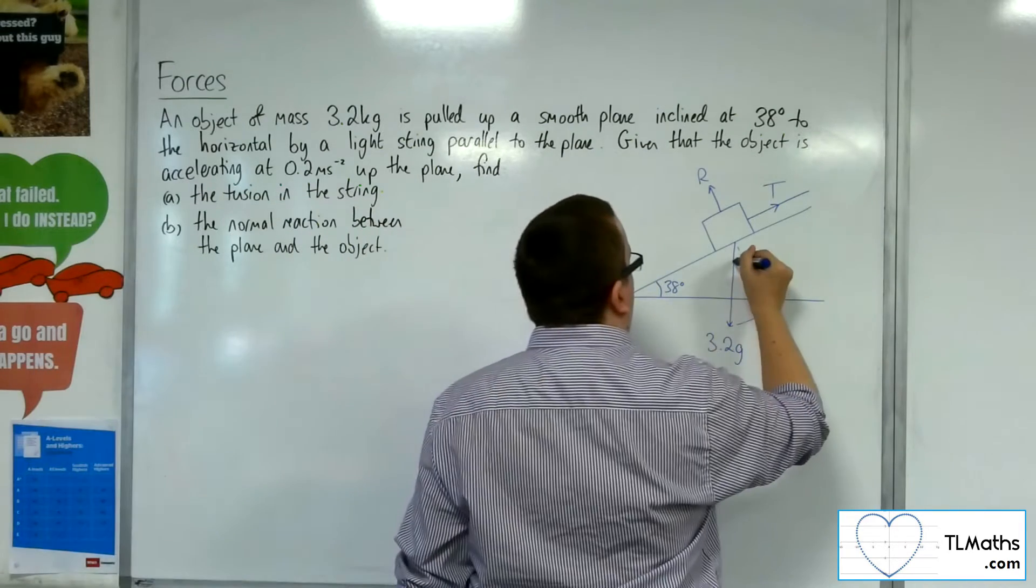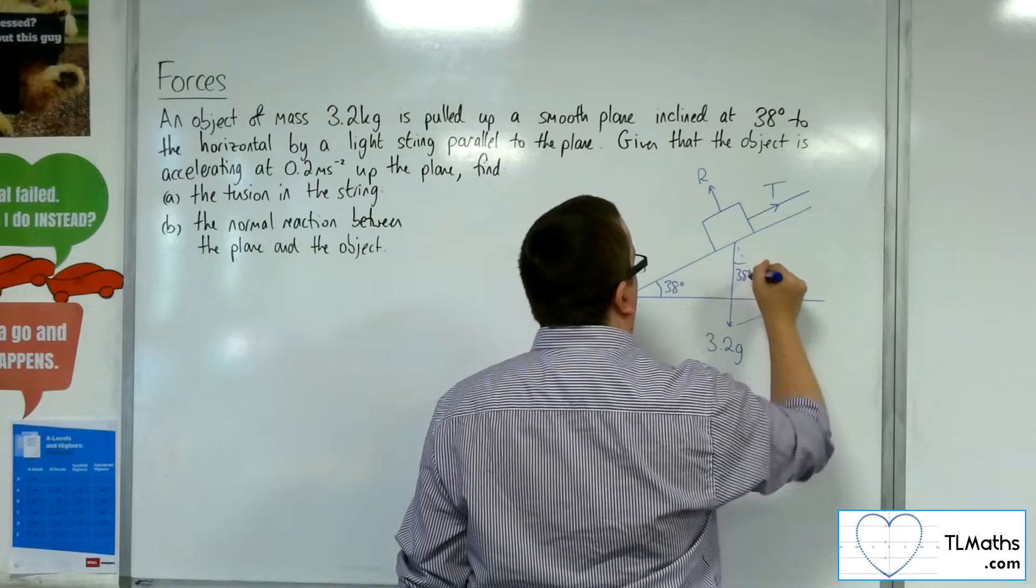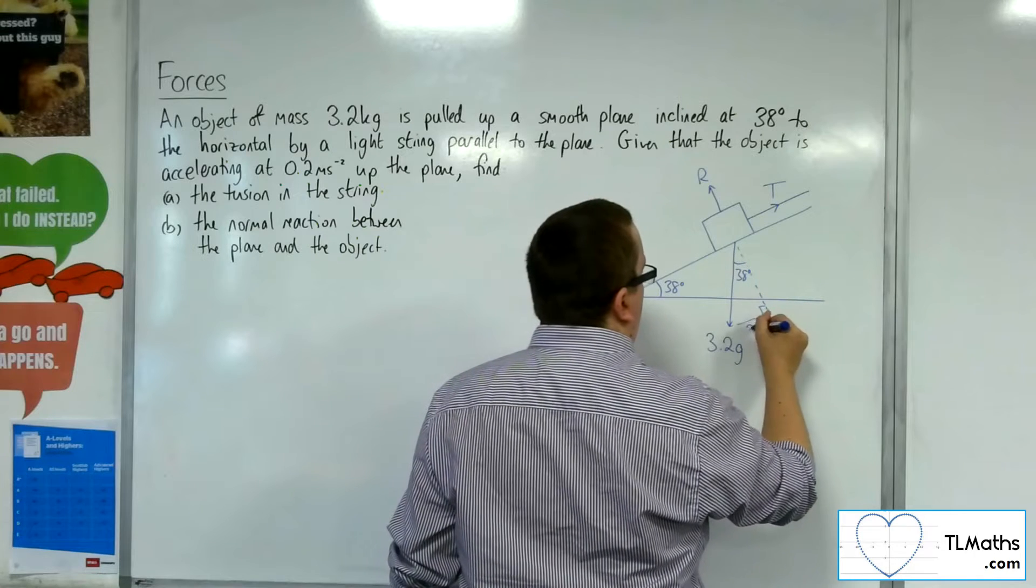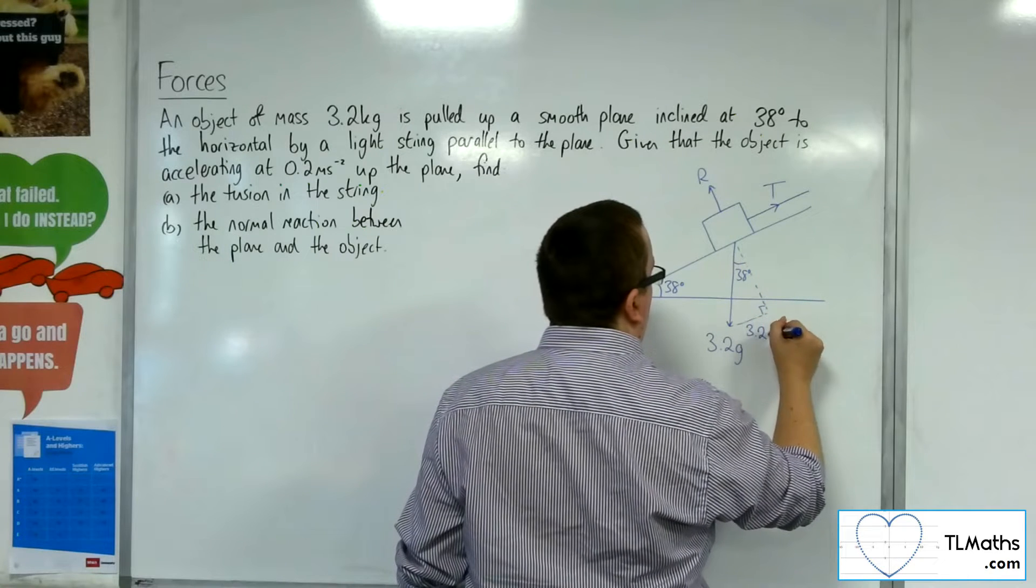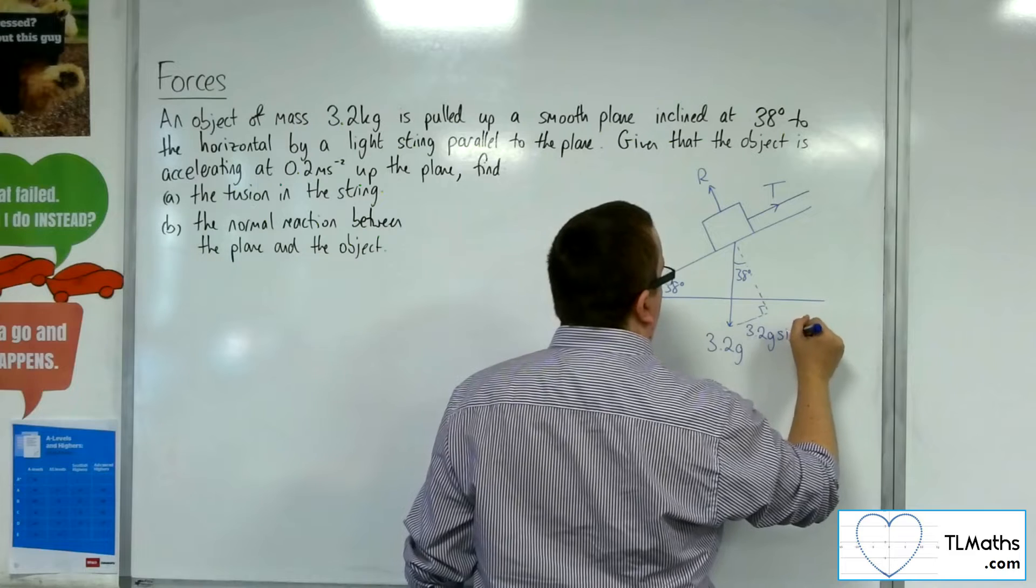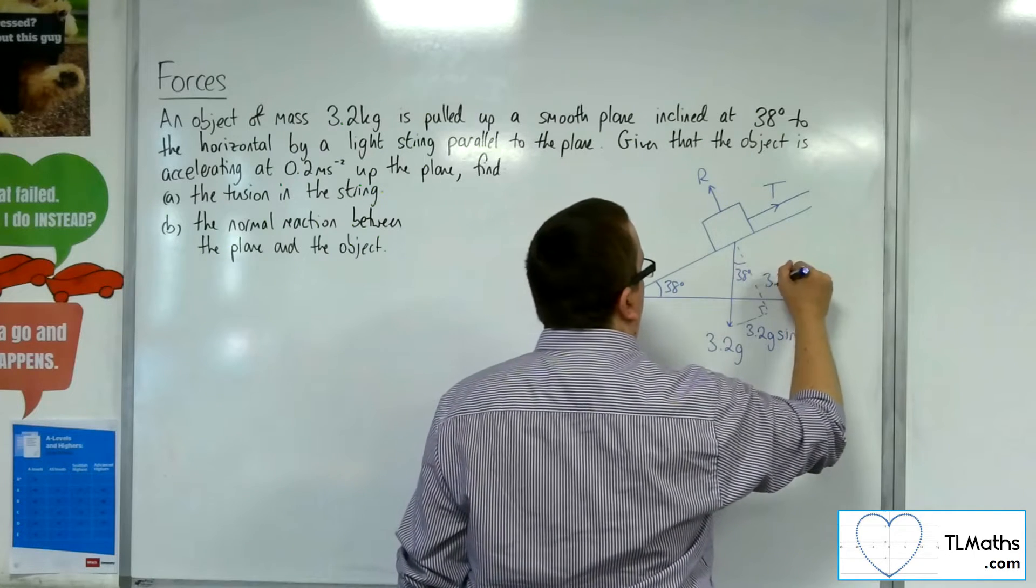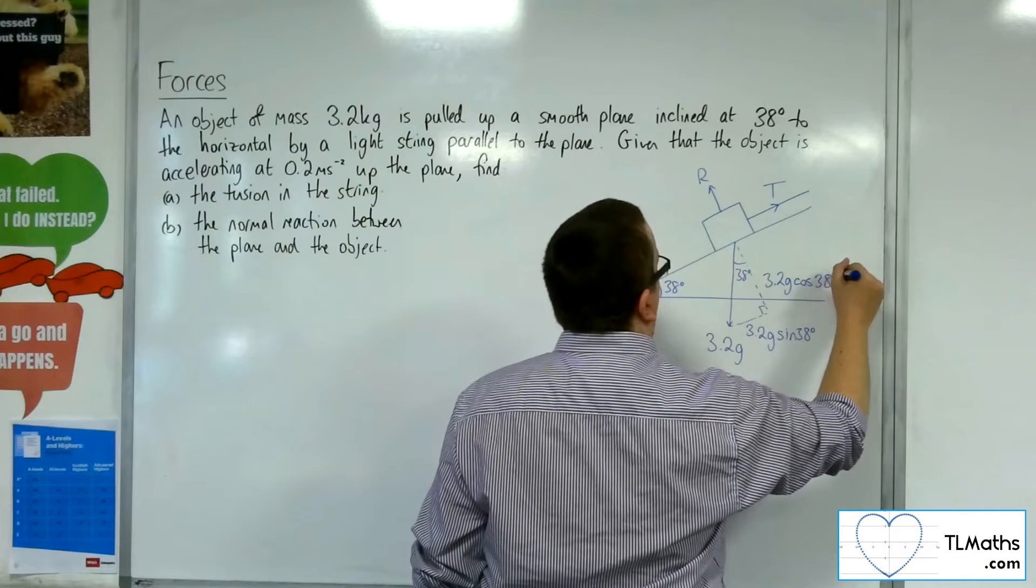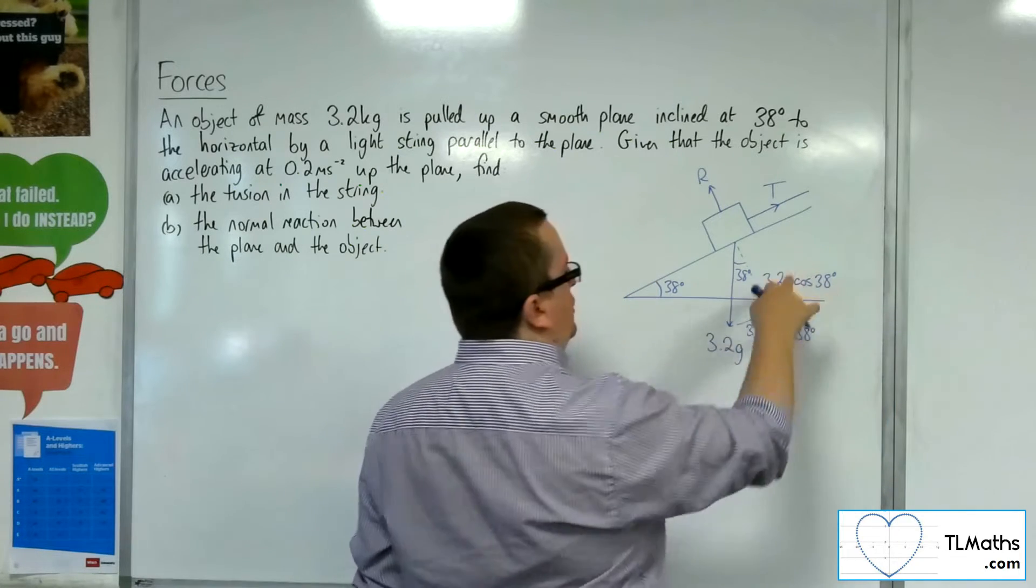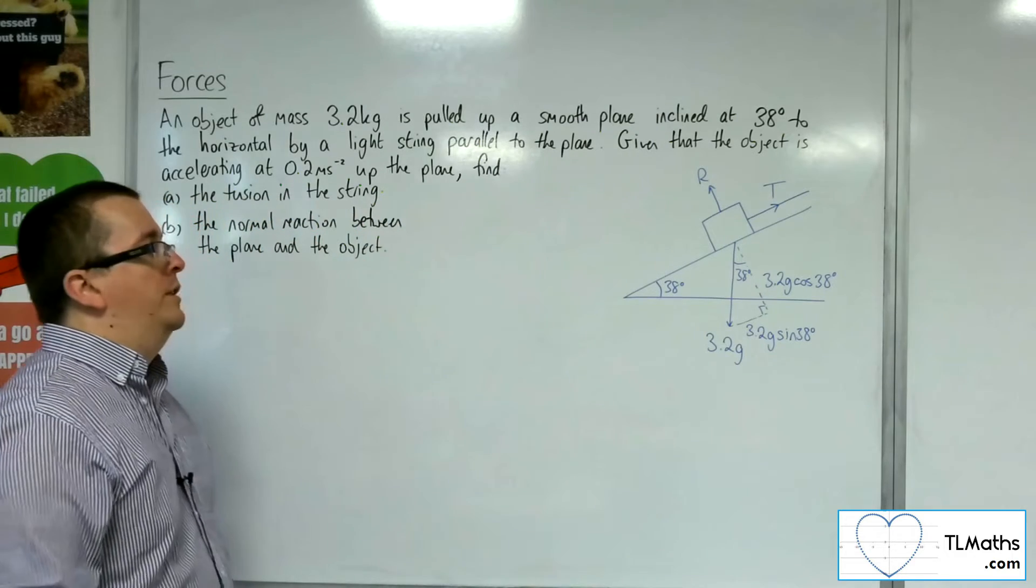So that angle is 38 degrees. This side will be 3.2g sine 38. And this side will be 3.2g cosine 38. The opposite and adjacent sides of that right angle triangle.